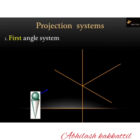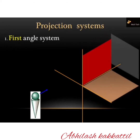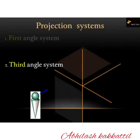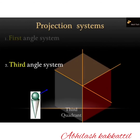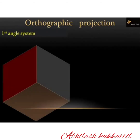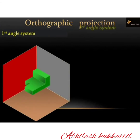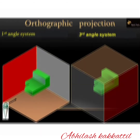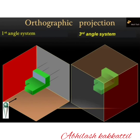Now we compare the first angle projection and the third angle projection by looking at the same object placed in the first, third, and fourth quadrants. The object located in the fourth quadrant and its front view positions are examined to understand the differences between the projection systems.